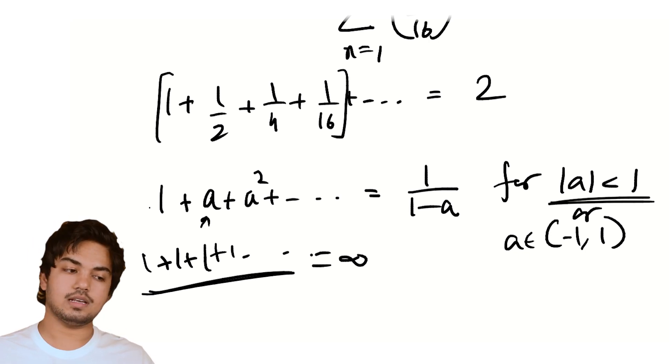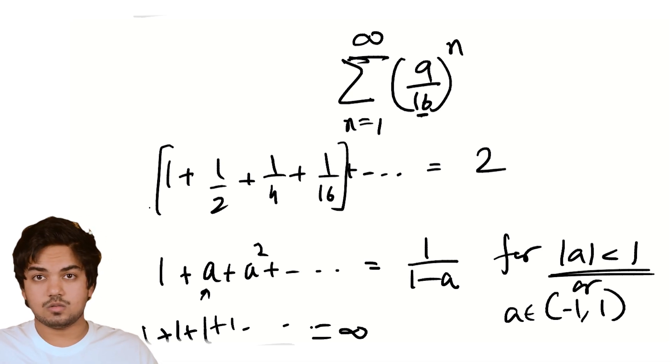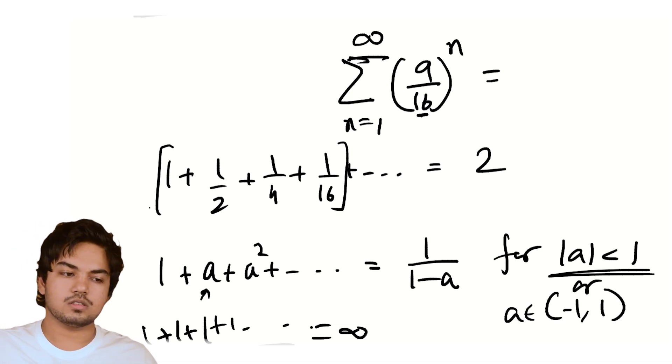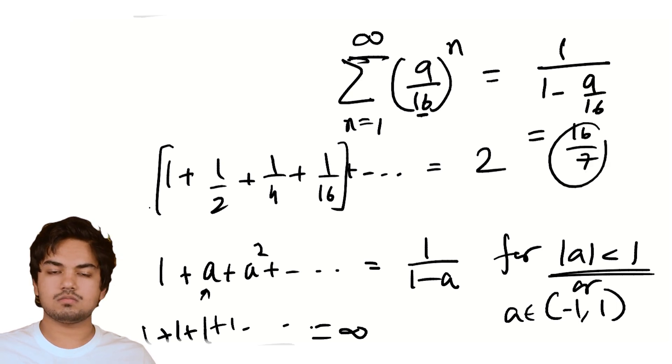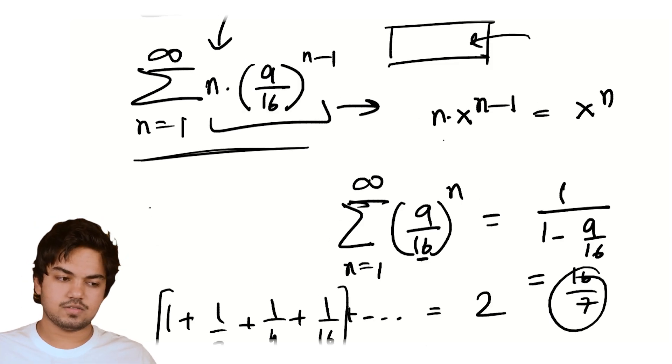And so this only obviously happens for |a| less than 1, which is not of any concern to us. 9/16 is less than 1, so you would promptly say, oh this is just 1/(1 - 9/16) which is 16/7. All good. That's not what our problem is, unfortunately. It's the derivative of that. The derivative. So what do we do about that? This is where the power of power series comes in, no pun intended.